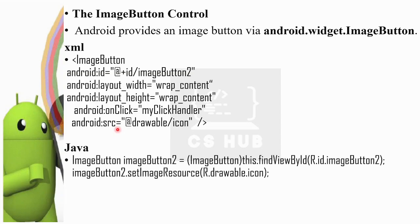Now let's use the Java code. If we set the Java code here, imageButton2 is equal to ImageButton from this.findViewById(R.id.imageButton). Normally, you can use imageButton2.setImageResource(R.drawable.icon). Then we set imageButton2.setImageResource again, using R.drawable.icon.